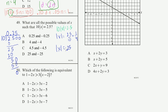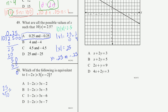The absolute value of x equals 0.25. That means x could be 0.25 (since |0.25| = 0.25), or x could be −0.25 (since |−0.25| = 0.25). So our two solutions are 0.25 or −0.25, which is choice A. A shortcut: dividing by 10 is equivalent to moving the decimal one place to the left, so 2.5 ÷ 10 = 0.25 directly.